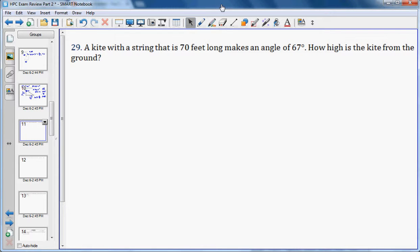Now we get to draw some pictures. So we start with a kite that has a string that is 70 feet long. Here's the string, it's 70 feet long and that's at an angle of 67 degrees.